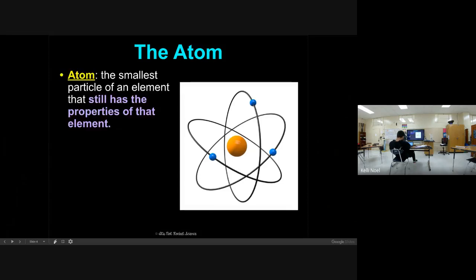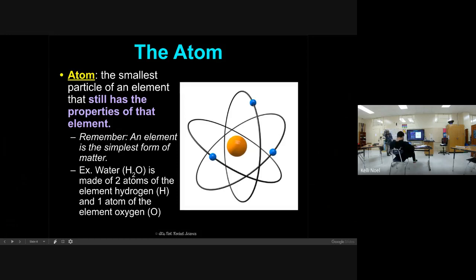Here's sort of a drawing of an atom. It is the smallest particle of an element that still has the properties of that element. An atom is kind of like a building block of matter, and the element is the simplest form of matter. Here's an example, water. Water's not an atom, but it's actually made up of atoms. It's made up of two hydrogen atoms and one oxygen atom.